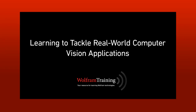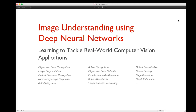Welcome to this session on image understanding using deep neural networks. My name is Mathias Odissio, and in this talk we will look at the practice of deep learning for real-world computer vision applications. This talk will not only demonstrate the capabilities of the neural network functionalities introduced in version 11 of the Wolfram language, but also the built-in flexibility when using both deep learning functionalities and traditional functions and algorithms.